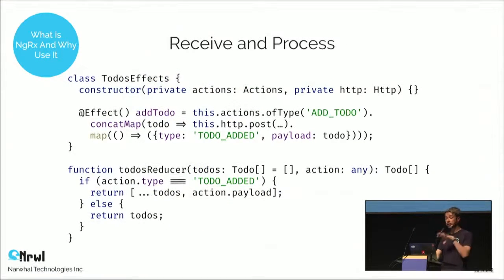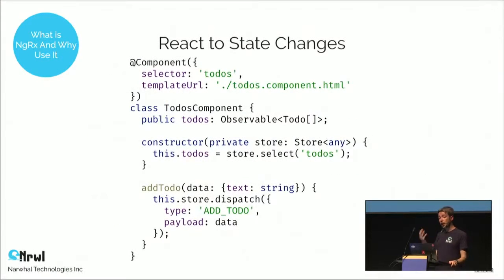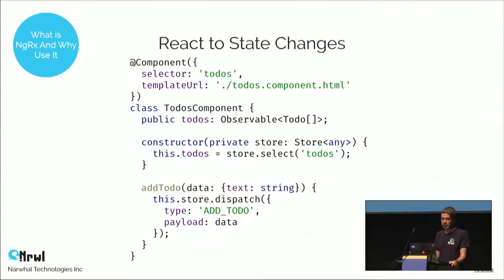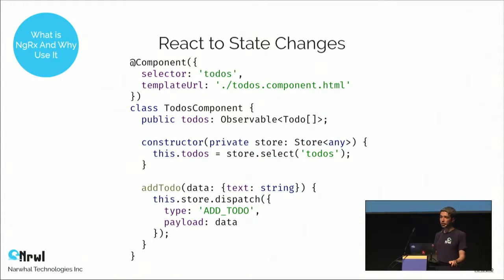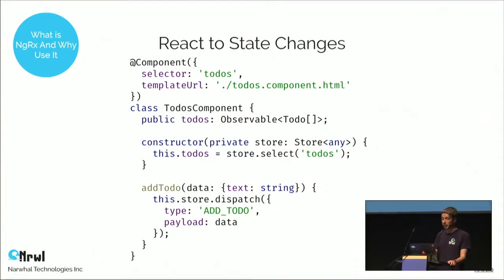Once the local state is updated, we often want to reflect that state change in the component's template. In the constructor, we select the state of to-dos from the store — we get this observable, and any time we add, remove, or update a to-do, that observable emits a new value — a new list of to-dos — which will be displayed by the component.